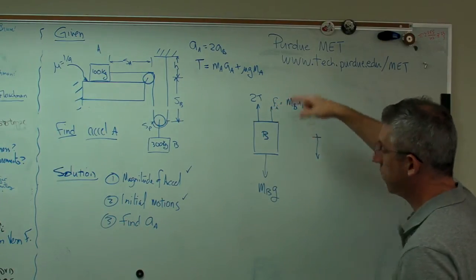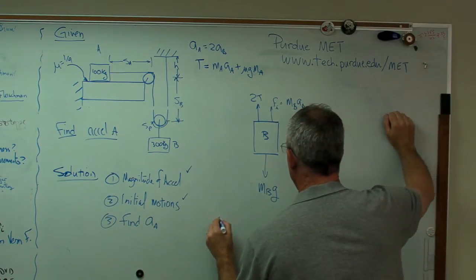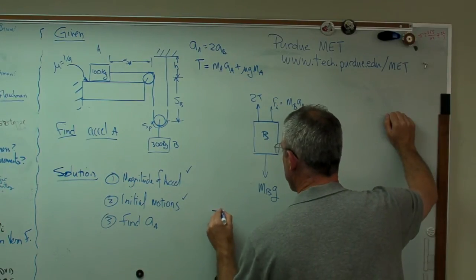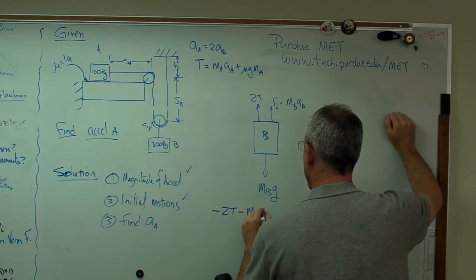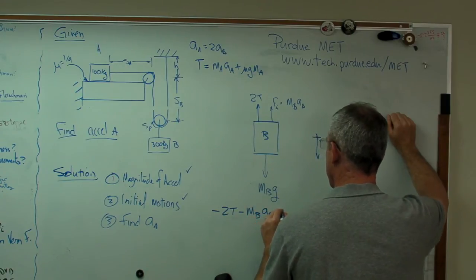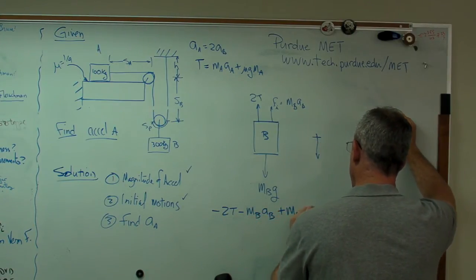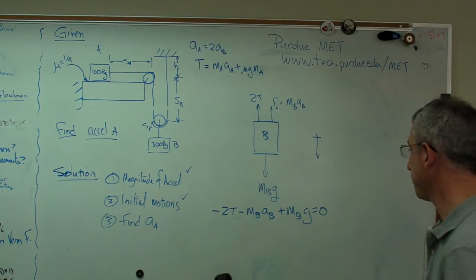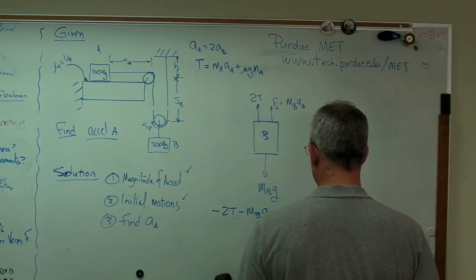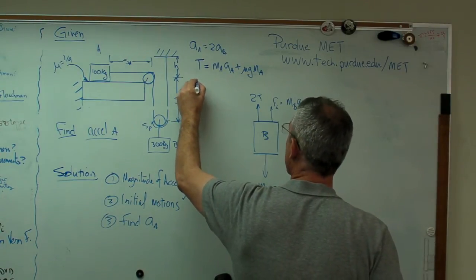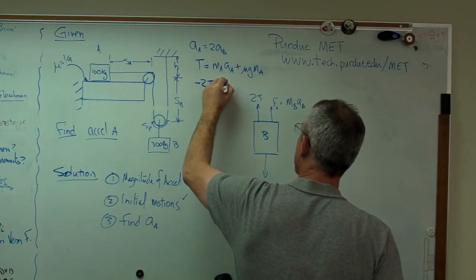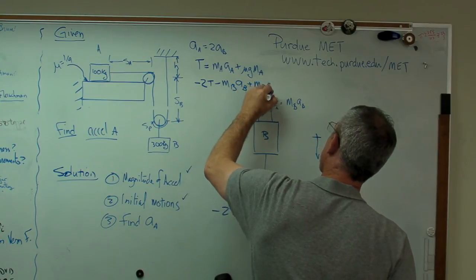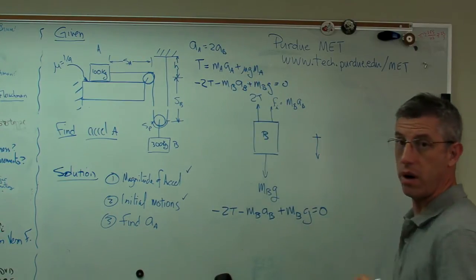Again, I'm going to write out equations of equilibrium. I'm going to say minus 2T minus MB AB plus MB G equals zero. That stuff's in the negative direction. That stuff's in the positive direction.